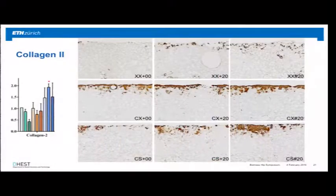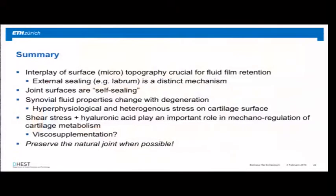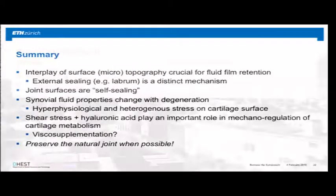We also saw that with the presence of fluid flow and hyaluronic acid, that collagen production progresses much deeper into the joint. So in summary, taking these two studies together, we think there's a really important interplay between the surface roughness of cartilage and lubrication. These joint surfaces are basically self-sealing and self-lubricating. And the synovial properties, because they change with disease, this can have a very important influence on cartilage metabolism. So this opens the question, is visco-supplementation perhaps not so bad? It might still be useful in the joint to try to prevent some of these detrimental changes in the joint. And nevertheless, I think all this taken together provides motivation for preserving the natural joint. Thank you.